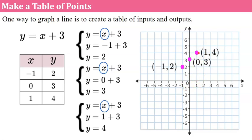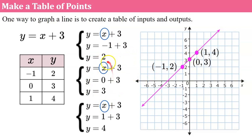If you were on paper, you would use a ruler and connect the three dots with a line. And if one of the points did not fall on the line, we would know that we made a mathematical error in calculating it. So this line is the graph of this equation.